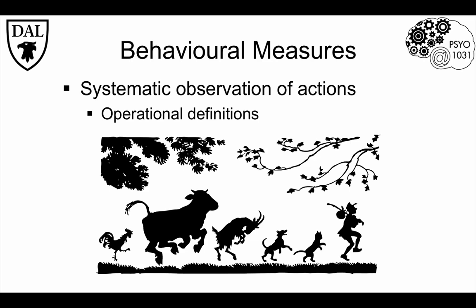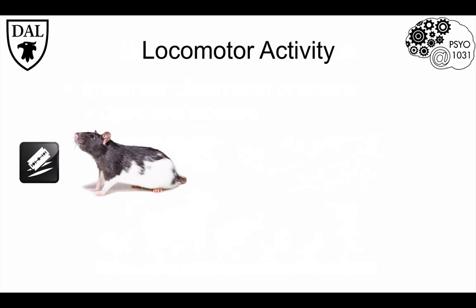Let's consider an example in animal research. Research on drug addiction often uses animal models, and one easy way to assess the effect of drugs like cocaine is to measure effects on locomotor activity, which is a fancy term for movement. Rats like the same drugs as humans, so they are a common choice in basic animal research on drug effects.